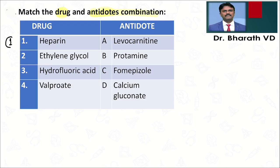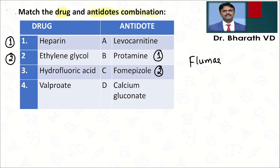Option one: heparin — what is the antidote? Yes, you're right: protamine sulfate. Second, we have ethylene glycol or methanol — the antidote is fomepizole, which is an inhibitor of alcohol dehydrogenase. Next, we have flumazenil — don't confuse this with fomepizole. Flumazenil is for benzodiazepine overdose, Z-drug overdose, or beta-carboline overdose.